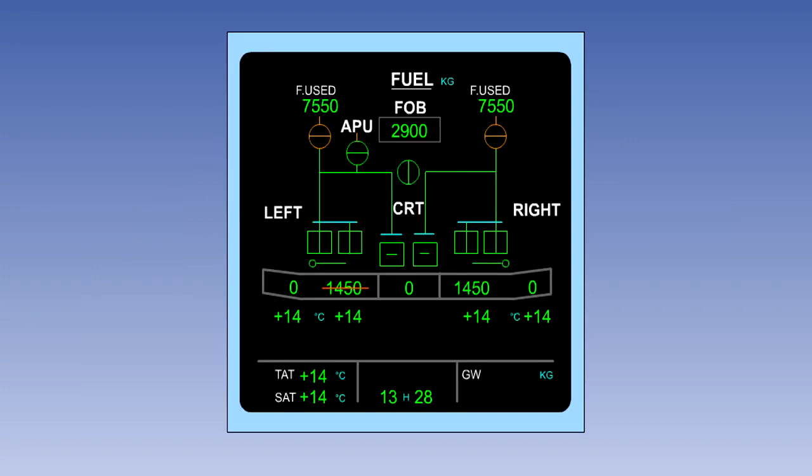In the event that the electrical fuel quantity measuring system fails, or if there is any doubt about the quantity of fuel on board, aircraft are fitted with a simple manual backup system to determine the quantity of fuel on board before flight.